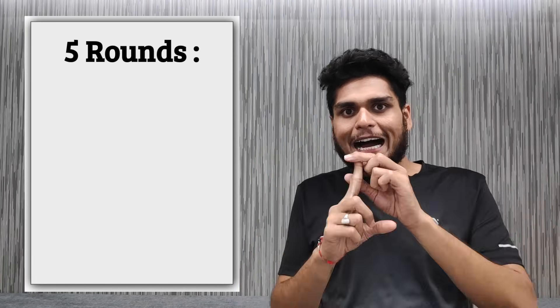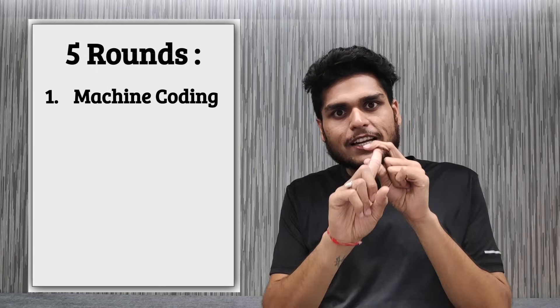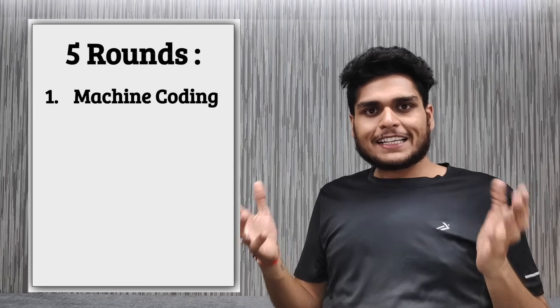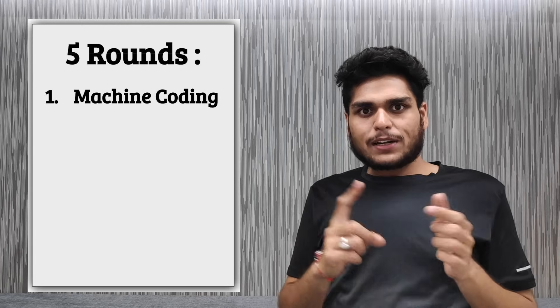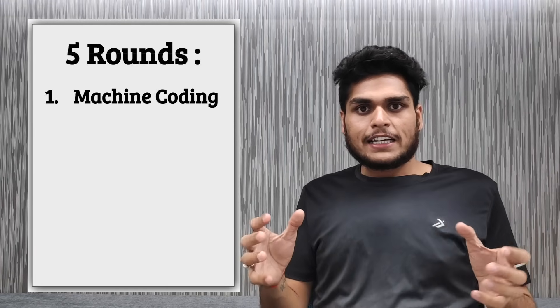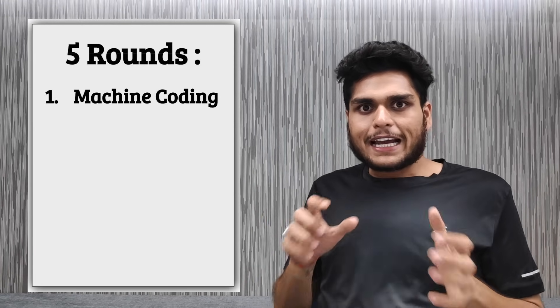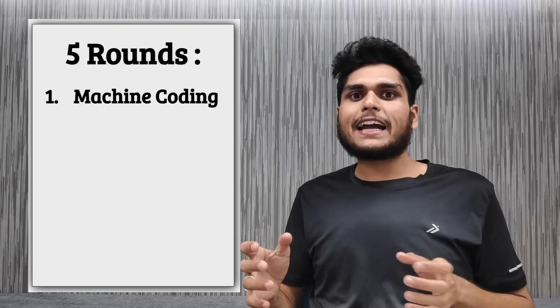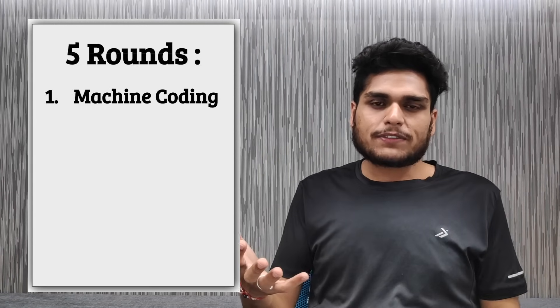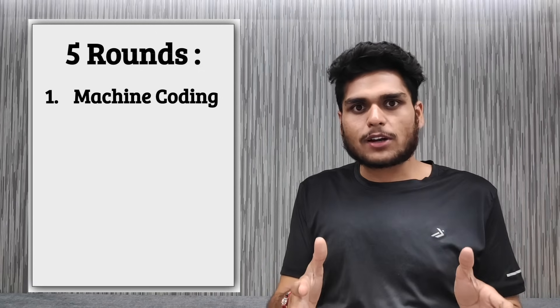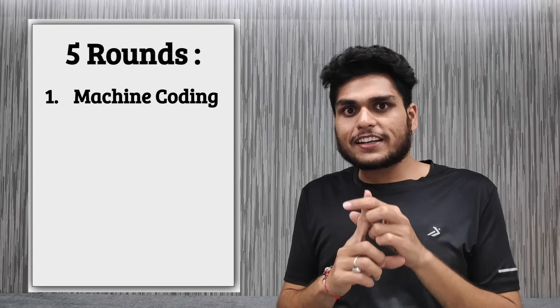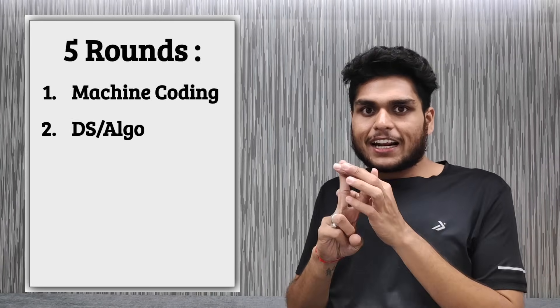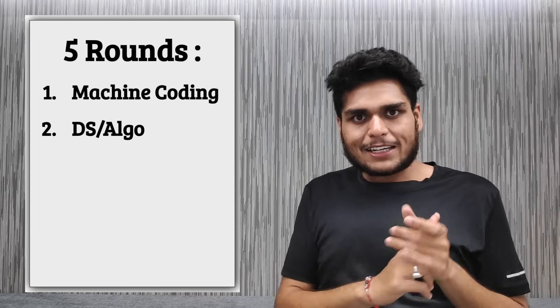These five sections are: first of all is the machine coding. So generally these companies take their first round as the machine coding. The main aim of this round is to test whether the candidate can code live or not. They'll give you a specific problem and you need to develop the solution right there and then. So that is generally the first round.